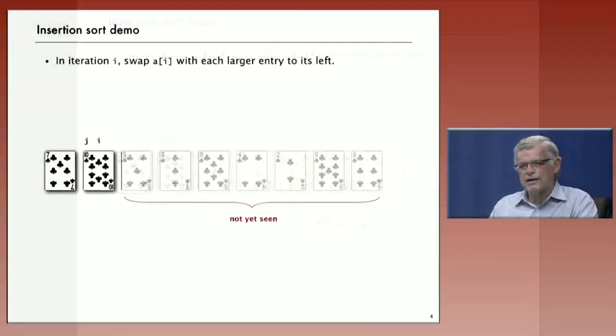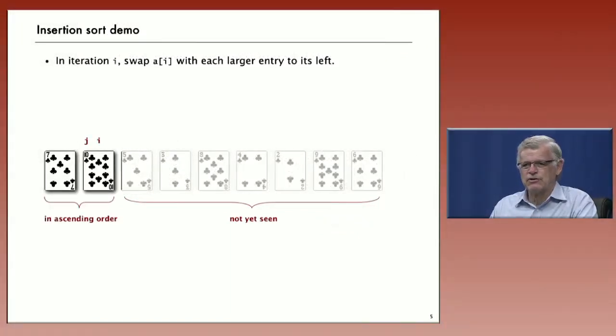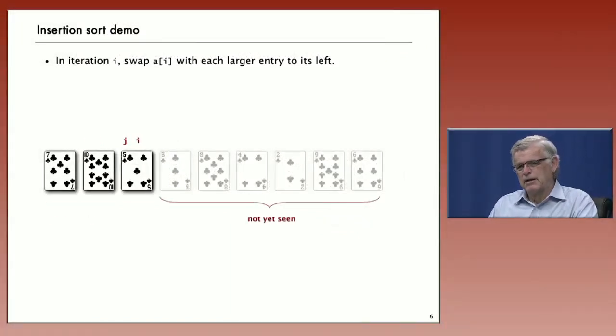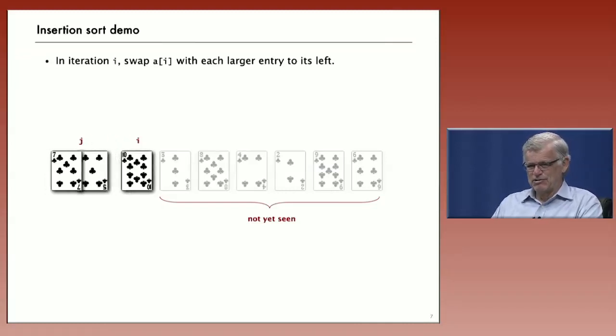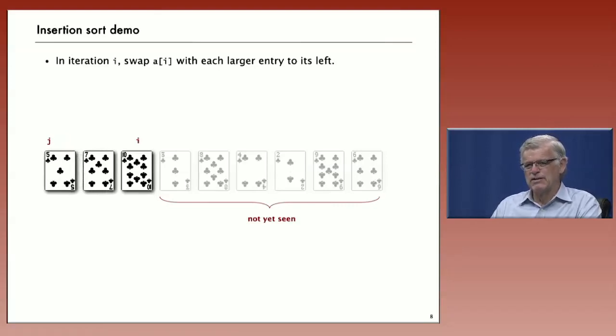So now when we increment i, well in this case, it's already in order. We don't have anything else to do. In the third case now when i is at the third entry in the array, now we start a index j, and we move that starting at i to the left. And what we need to do is just exchange the 5 with every element to its left that's greater. So first we exchange it with the 10. It's still not in place, so we exchange it with the 7. Now we get to the beginning of the array, and once we've done that, or we've hit a smaller element, then we have everybody to the left of i in order.